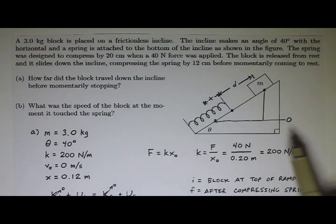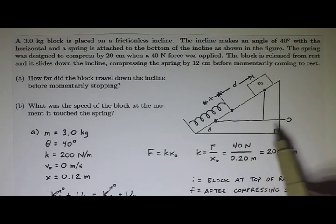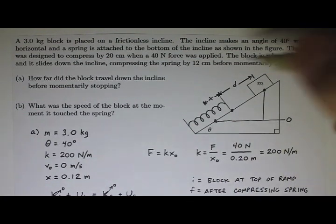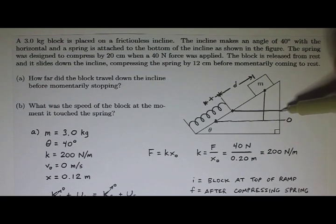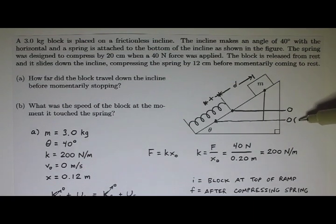So for Part A, I picked my zero line to be after the spring had compressed all the way, but since now I'm interested about when it gets to here, I'm going to call this my new zero line. So this is my zero for Part A, this is my zero for Part B, and that's okay.